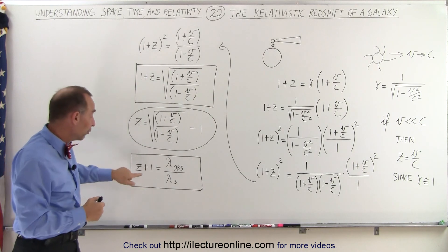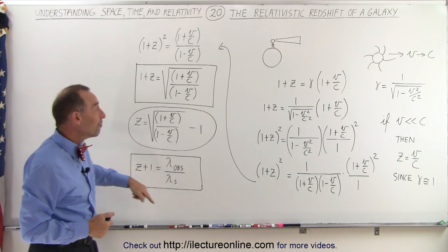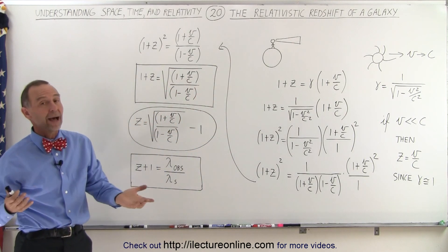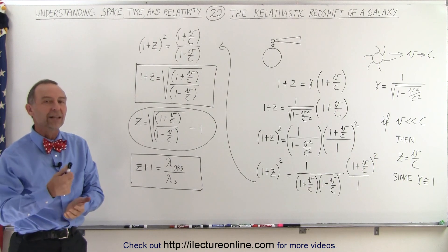You can see how they move at very high speeds relative to us, and therefore we need to take into account the z factor, which is based on the Lorentz factor. Stay tuned and we'll show you how z is used in galaxy recession.